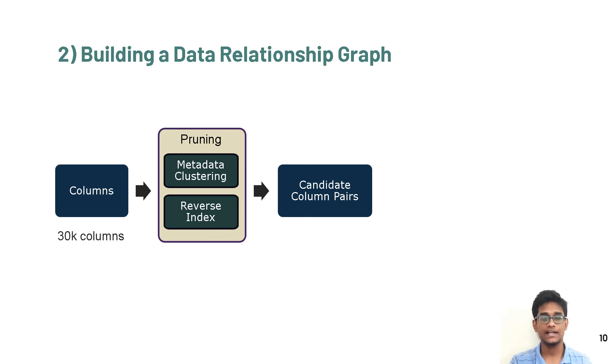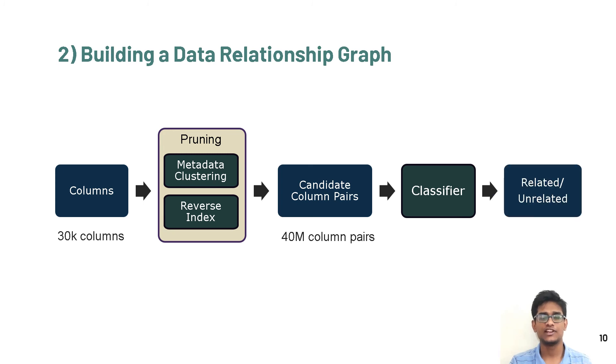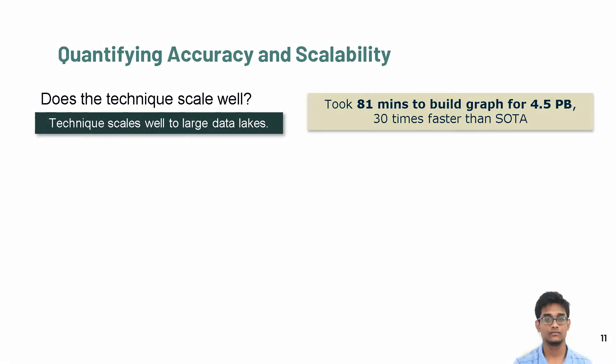In reverse index-based pruning, we create an inverted index to map the data values to the columns they occur in. Any column pair which shares even a single value is added to the list of candidate pairs. This reduces our candidate pairs from 450 million to just 40 million pairs. Then we pass these pairs to our classifier which predicts whether each of the pair is related or not. We built a data graph or a data lake containing around 4.5 petabytes of data in 81 minutes. This was 30 times faster than other state-of-the-art techniques, thus telling us that our approach scales well.